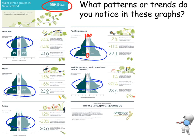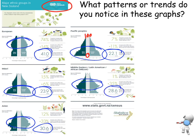The key pieces of information tell me the median age is 41 for European, 23.9 for Māori, 30.6 for Asian, 22.1 for Pacifica, and 28.6 for Middle Eastern/Latin American/African. This is the kind of thing we want to be able to notice when we look at good graphs. We'll see you next time.